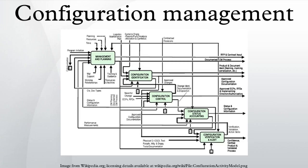Configuration audits are broken into functional and physical configuration audits. They occur either at delivery or at the moment of effecting the change. A functional configuration audit ensures that functional and performance attributes of a configuration item are achieved, while a physical configuration audit ensures that a configuration item is installed in accordance with the requirements of its detailed design documentation.